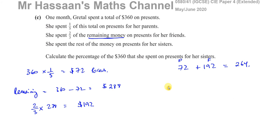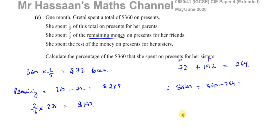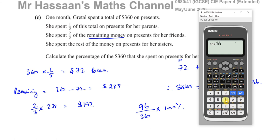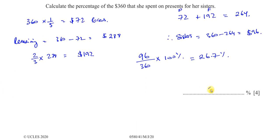Therefore the amount spent on her sisters is $360 minus $264 = $96. The percentage of $360 that she spent on her sisters is 96 over 360 times 100%, which equals 26.7%.